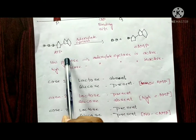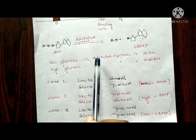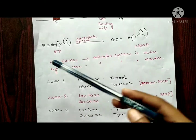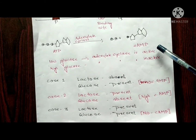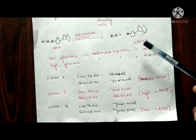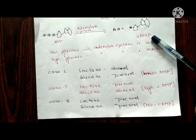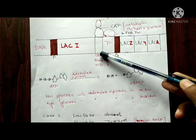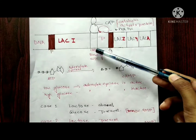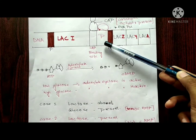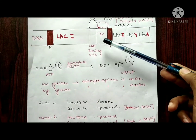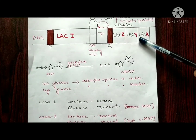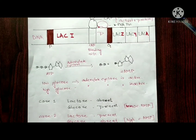But when glucose levels are low, adenylate cyclase is active and converts ATP to cyclic AMP. The cyclic AMP is produced, it activates CAP, which causes conformational changes in DNA so that RNA polymerase binds tightly to the promoter and the transcription rate increases significantly.